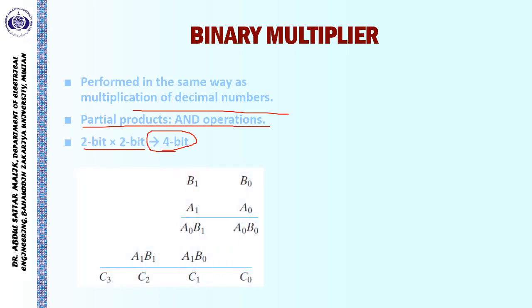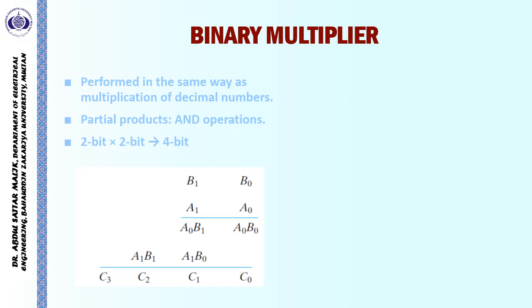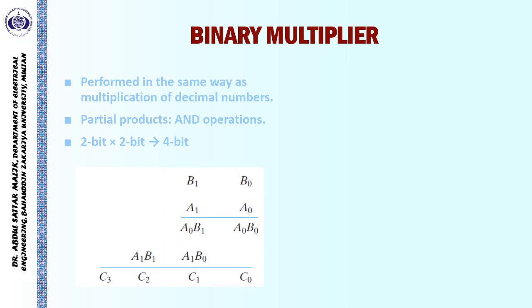For example, we have a number A with two bits A0 and A1, and we have another number B with two bits B0 and B1. In order to perform the multiplication of these two numbers, initially we multiply A0 with B0 and B1, giving partial products A0B0 and A0B1. Then we shift and multiply A1 with B0 and B1, and after that we simply add these partial products.